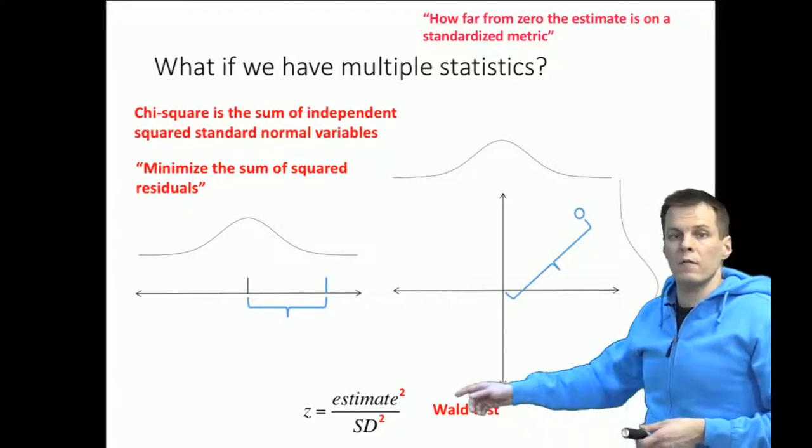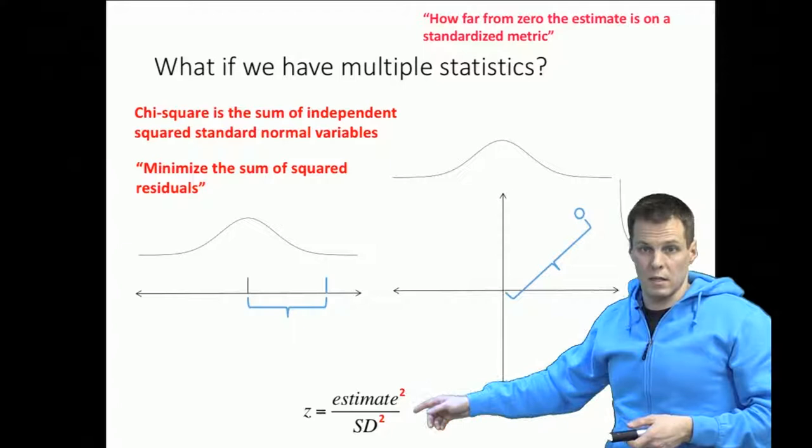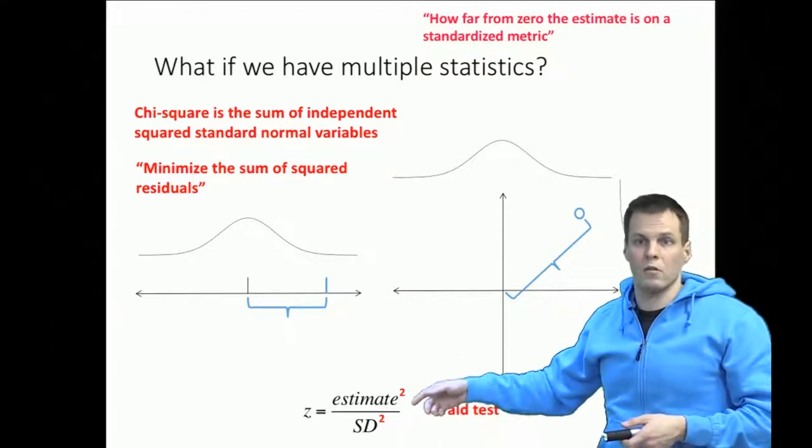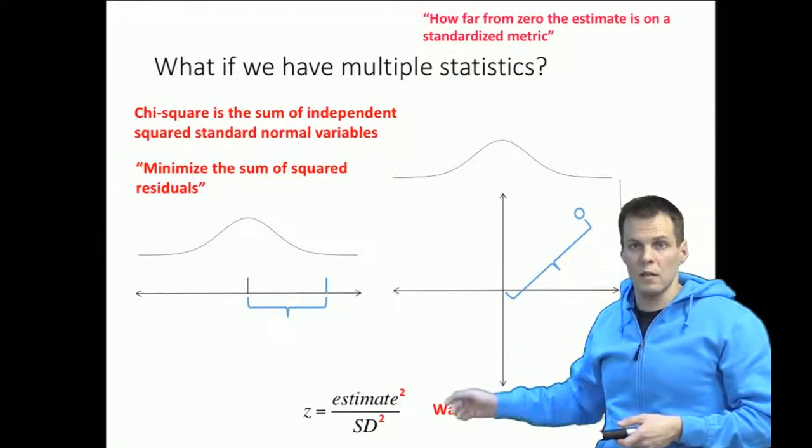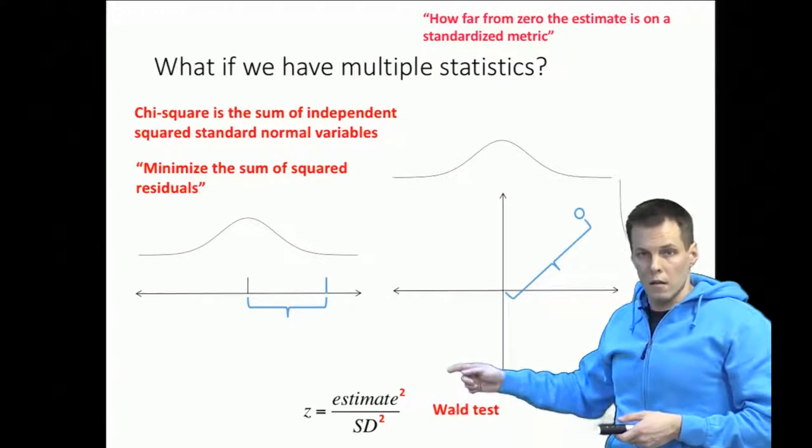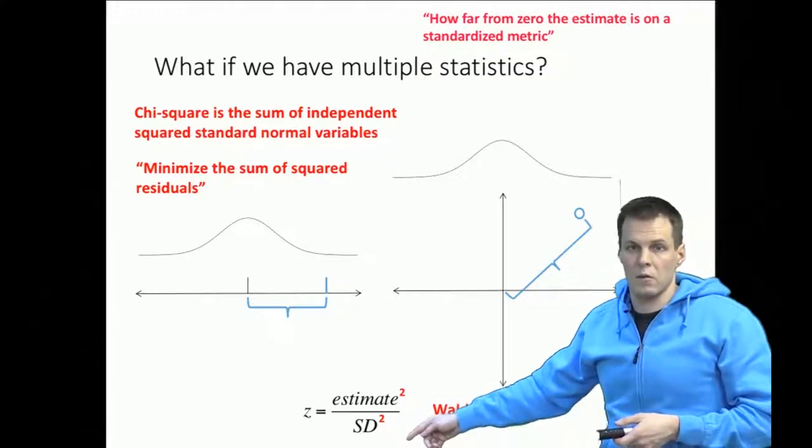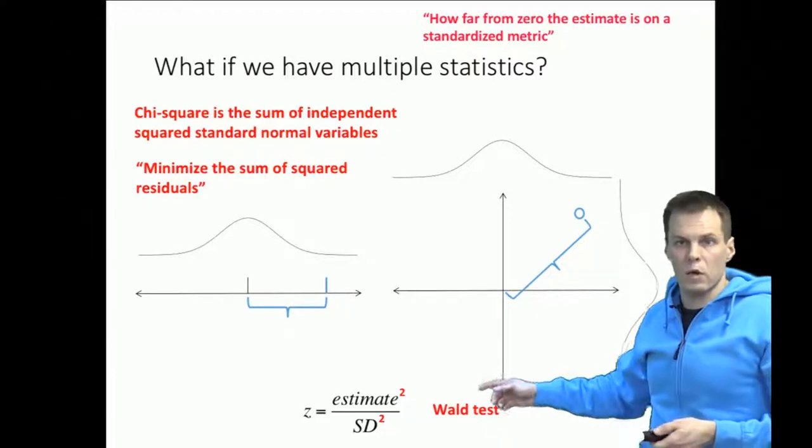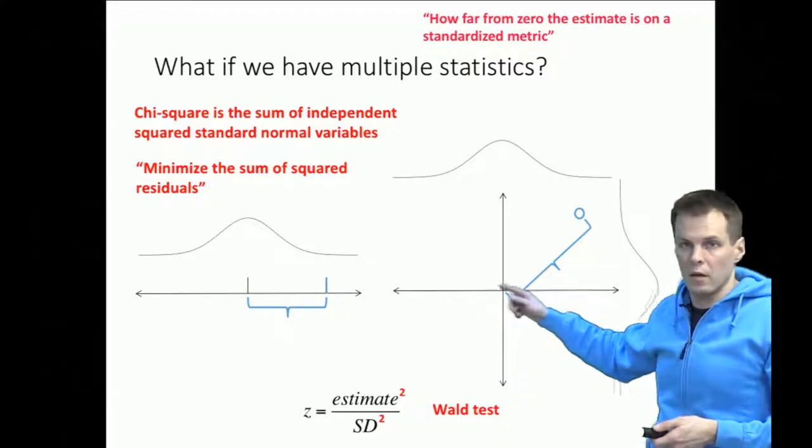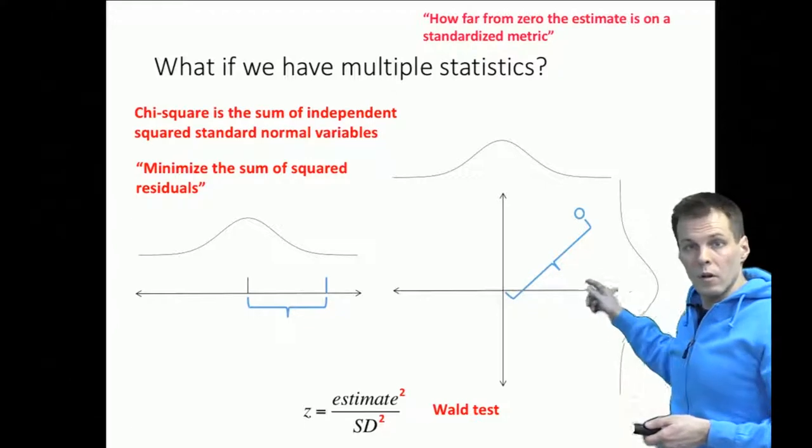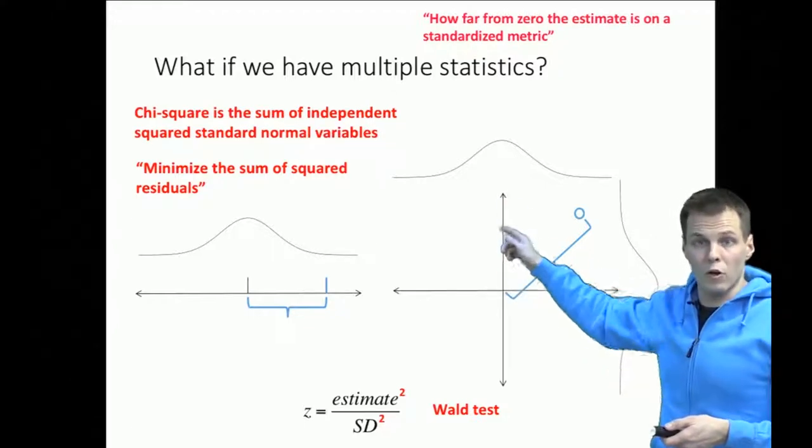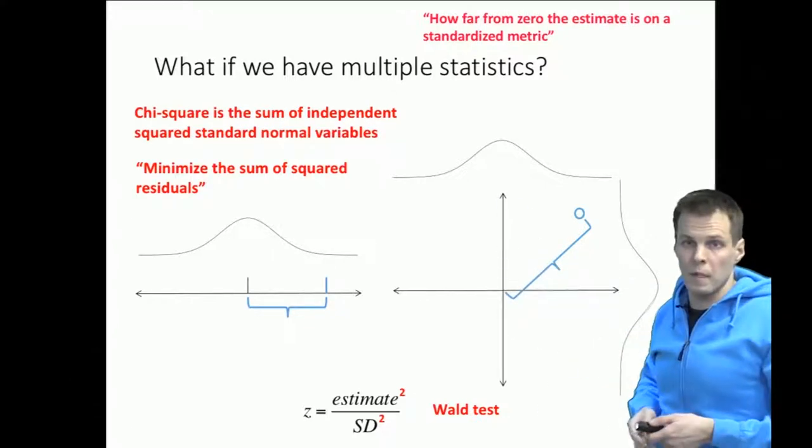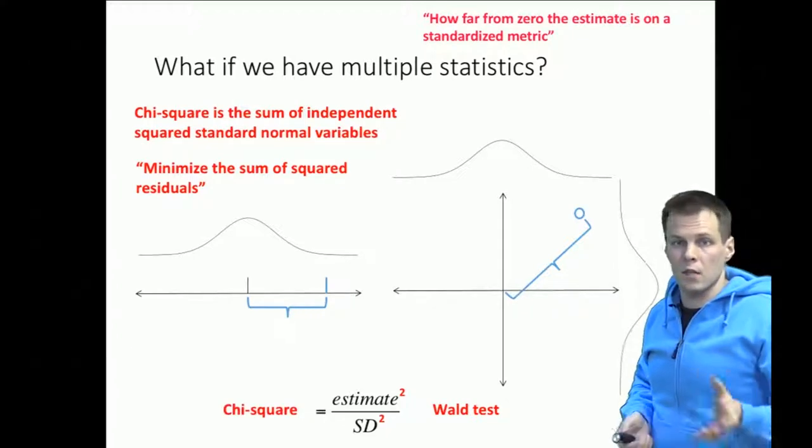So whenever you divide estimate divided by standard error then you are doing a z-test or a t-test. If you divide estimate squared divided by standard error squared then that's called a Wald test and the advantage of Wald test is that it can be applied to these multiple or two-dimensional or more dimensional problems and the statistic is chi-square distributed.